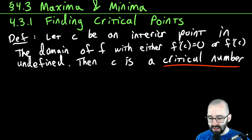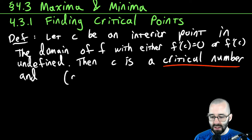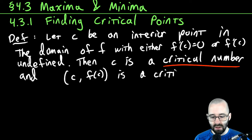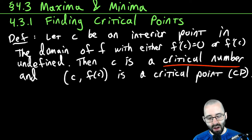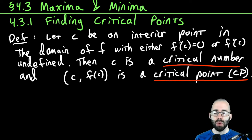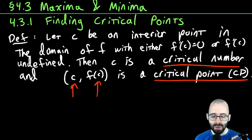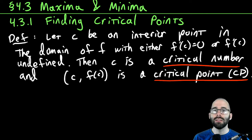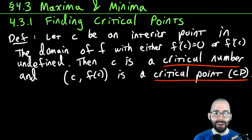C is a critical number, and the point at C — that's the point (C, F(C)) — is a critical point, often abbreviated CP. So C is the part of the domain where this happens, and the critical point is the input and output together. The critical point is a point on the graph.